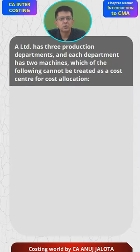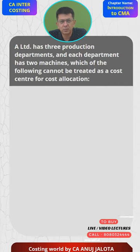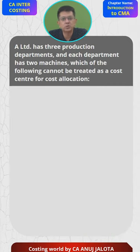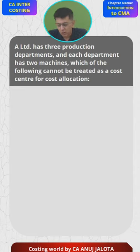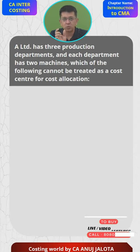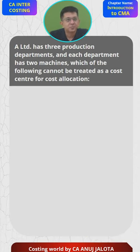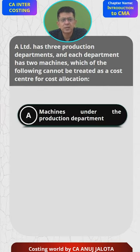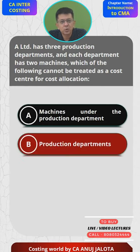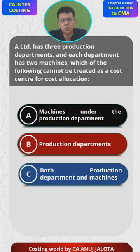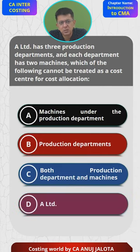Today's question: A Limited has three production departments, and each department has two machines. Which of the following cannot be treated as a cost center? A cost center means a place for which we are trying to accumulate cost. The four options are: A — machines under the production department, B — production departments, C — both production department and the machines, and D — A Limited.